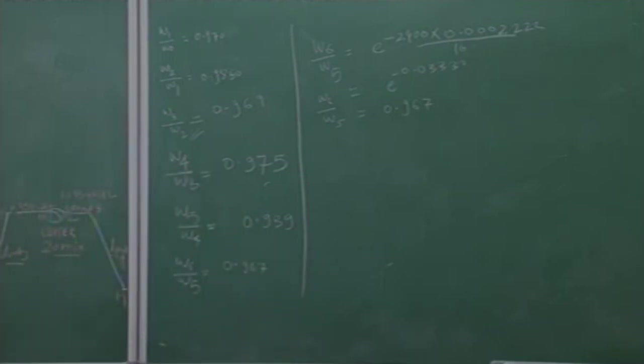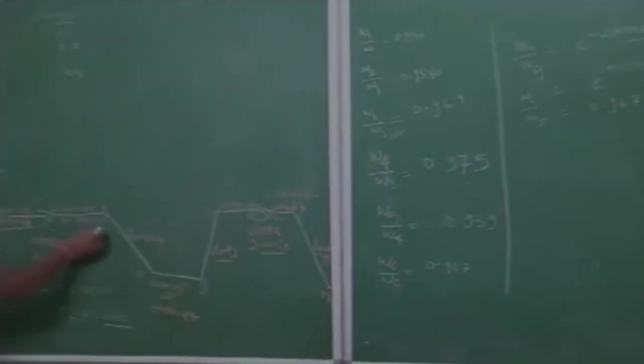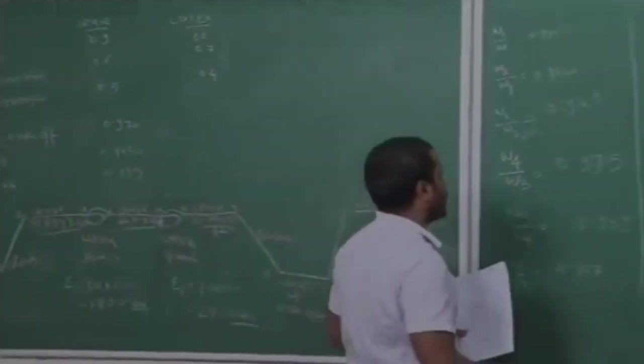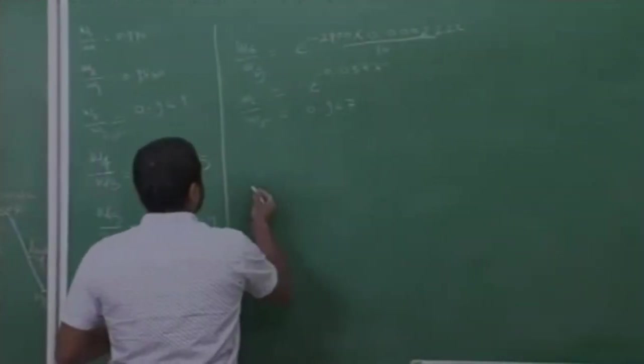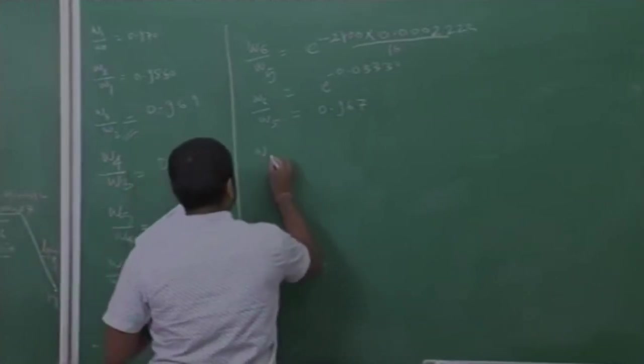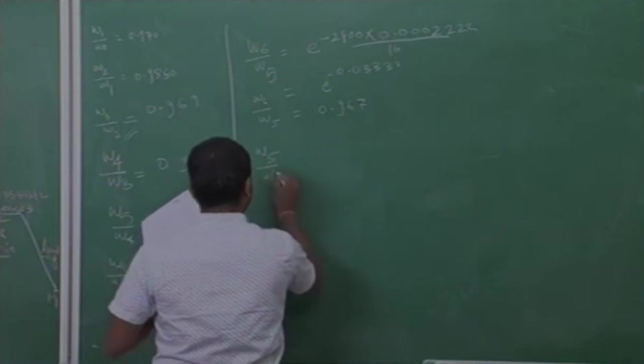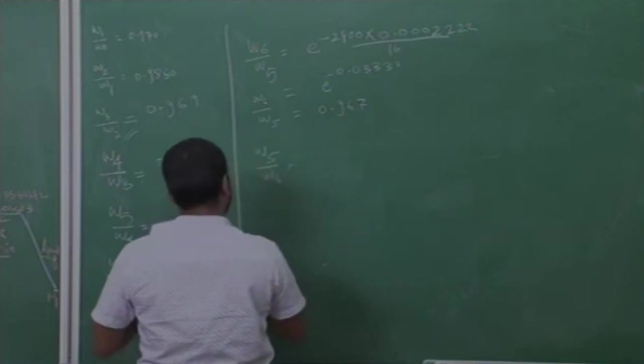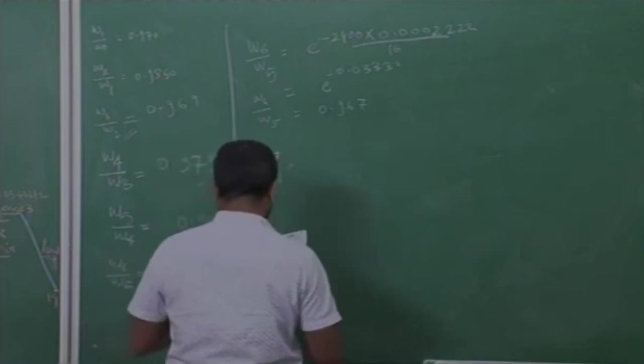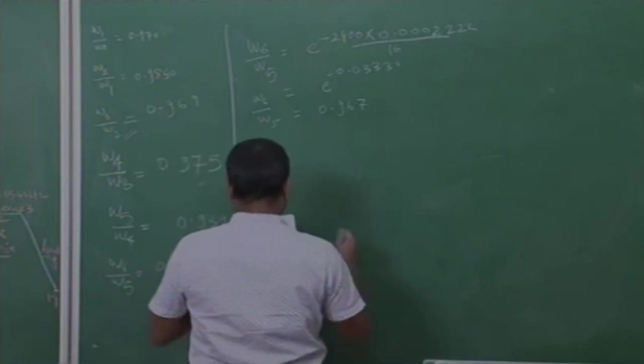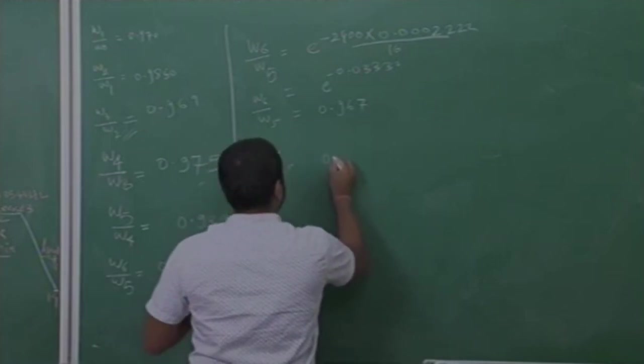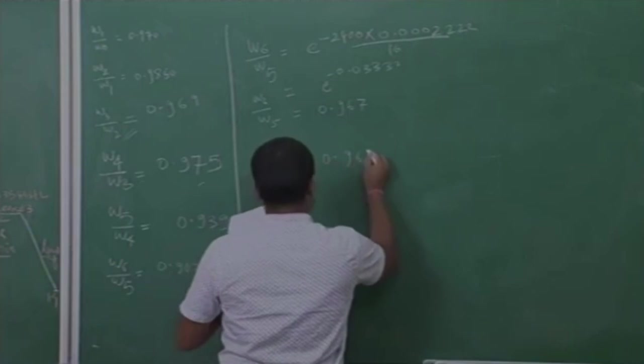Again for this cruise condition, this range and this range is same so ratio is also same. So ratio will be W7 by W6 is 0.969.